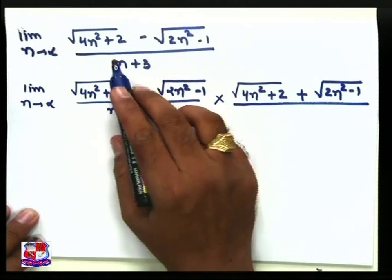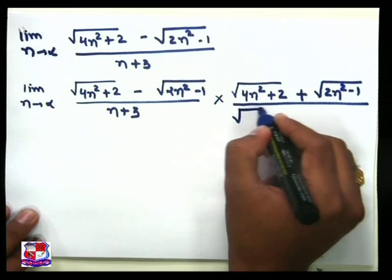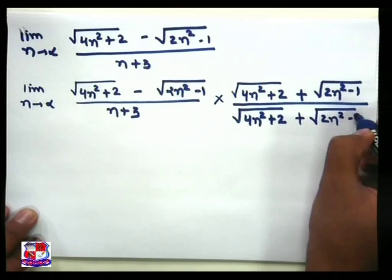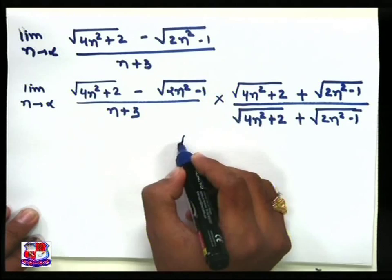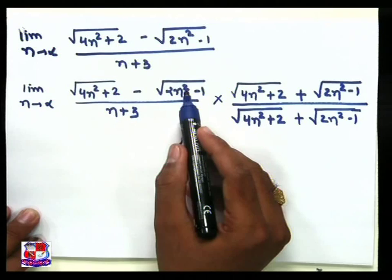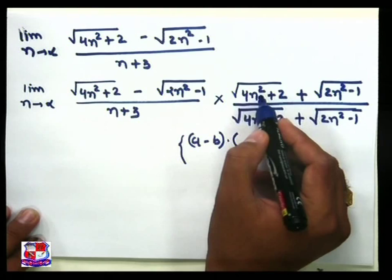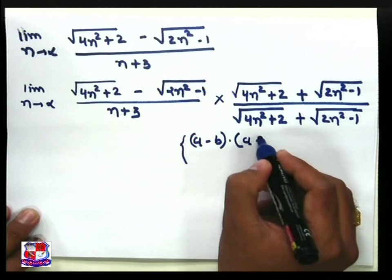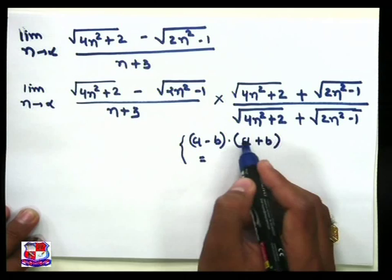If we take this term as a and this term as b, we call this term a minus b. The final value is a minus b multiplied by a plus b. If a minus b times a plus b, we can write a² − b². We want to simplify the total numerator into a² − b².